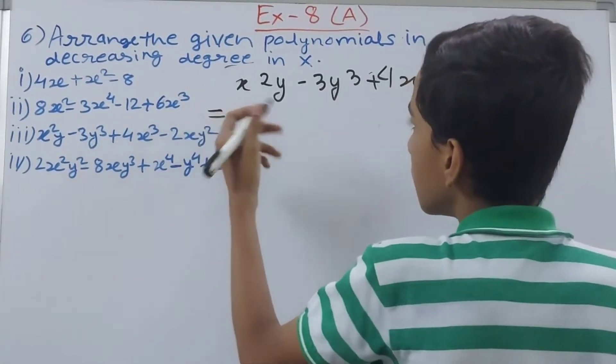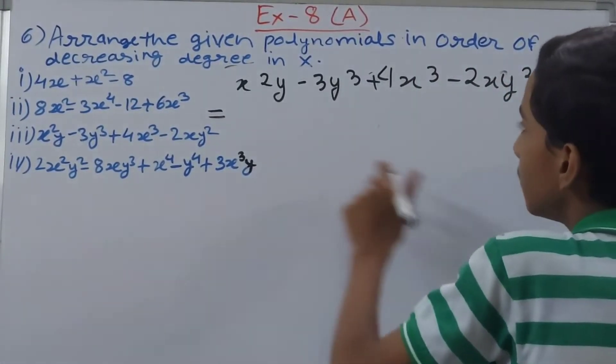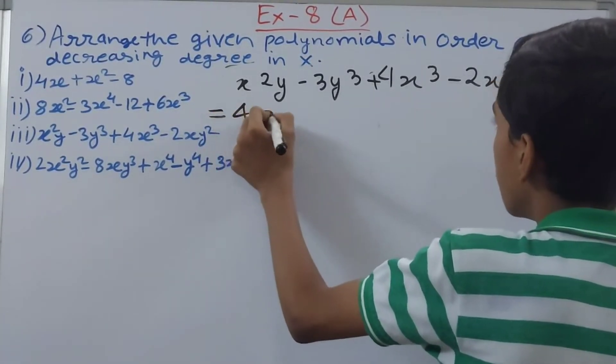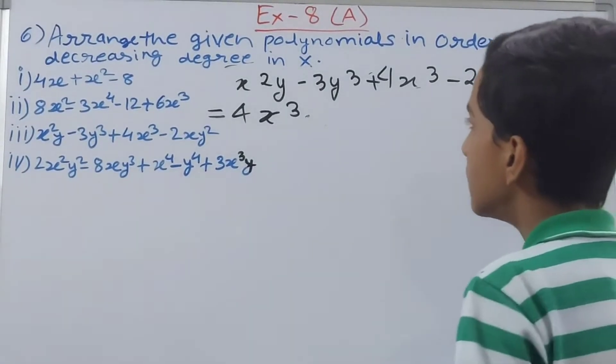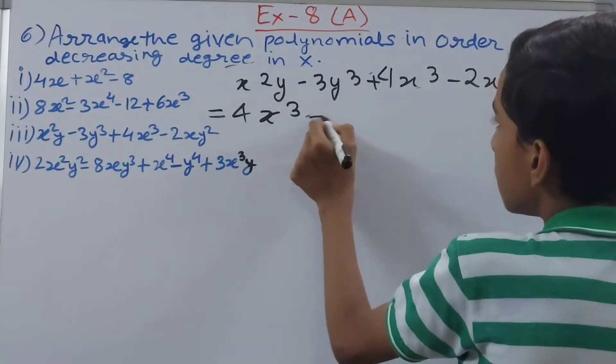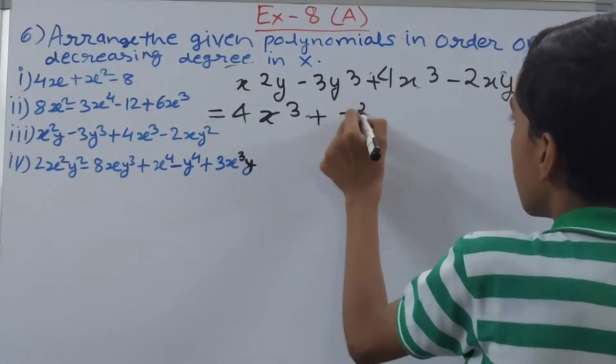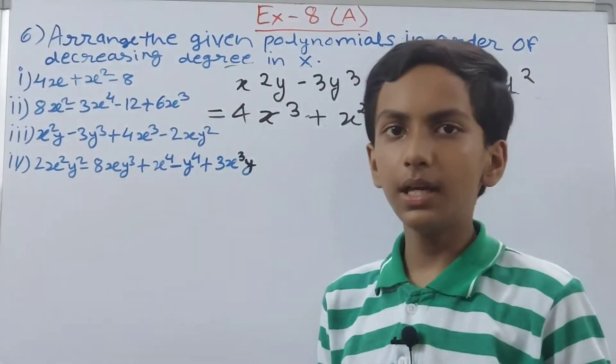When nothing is written, now we arrange or you can say rearrange. So the greatest one is which one? This one with the cube, so 4x cube. Now on to the next one, so we will see the one with the square in it, so this one. This is plus x square y.